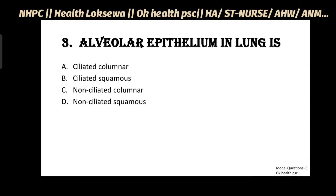Question No.3: Alveolar epithelium in the lung is - Ciliated Columnar, Ciliated Squamous, Non-Ciliated Columnar, Non-Ciliated Squamous. Answer: D - Non-Ciliated Squamous. Alveolar epithelium in the lung is Non-Ciliated Squamous.